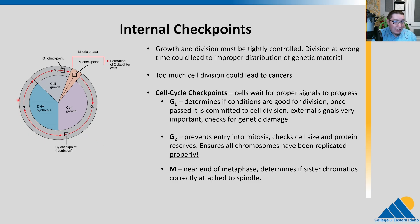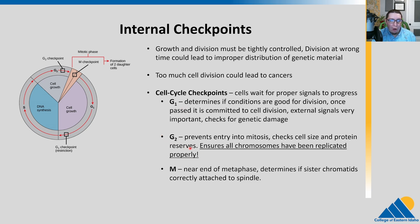Once we go past the G1 checkpoint, we synthesize the DNA and go through G2, which is our recovery phase after DNA synthesis. Then we have the G2 checkpoint, which prevents entry into mitosis. It checks cell size and that there's enough proteins in reserve to do all the complicated pulling apart. Critically, this ensures that all of the chromosomes have been replicated properly — the G2 checkpoint confirms that all went correctly so we have the correct number of chromosomes when we go to divide.